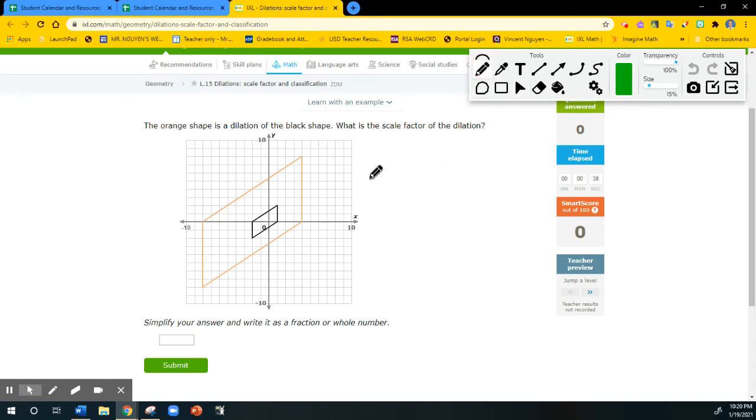So before we start, let's just review the formula real quick. It's very simple. To find any scale factor, you take the value of the new image, which is the new figure. You divide that by the value of the original. So new over original.